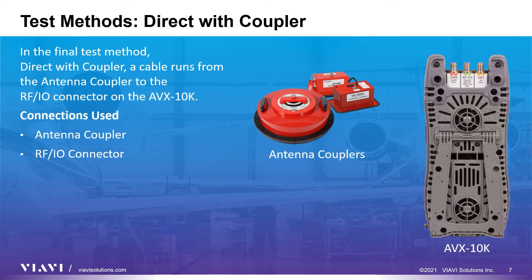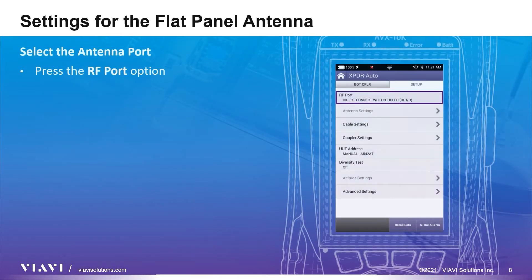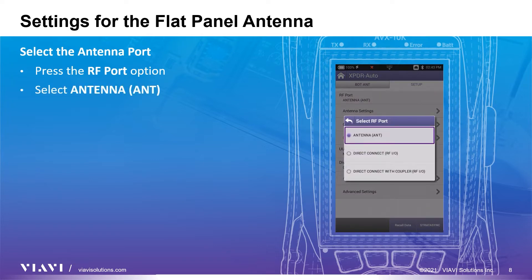The last test method is direct with coupler. The couplers are attached to the RFIO connector port on the AVX10K. The loss values for the coupler and connecting cable can be found on the coupler and cable and will be used later in the setup. The test method is set via the RF port option — press RF port on the display to see a pop-up menu with the three test methods and choose the option suited to your needs.